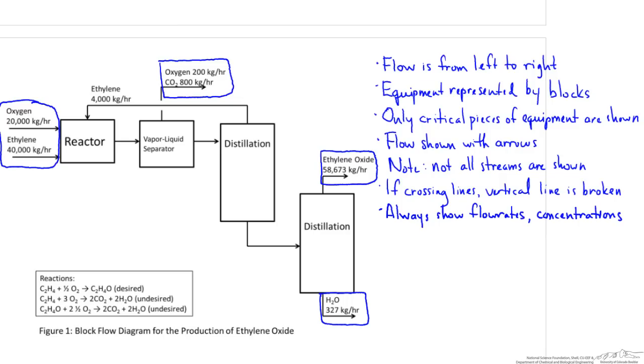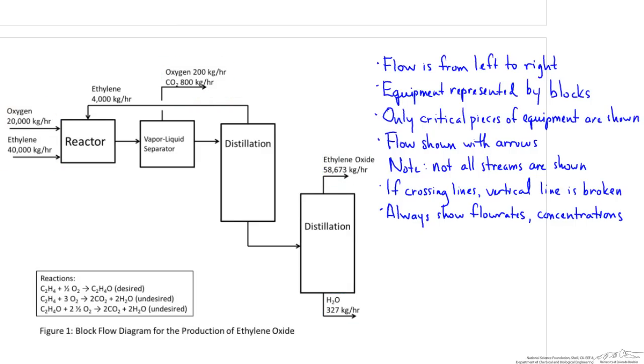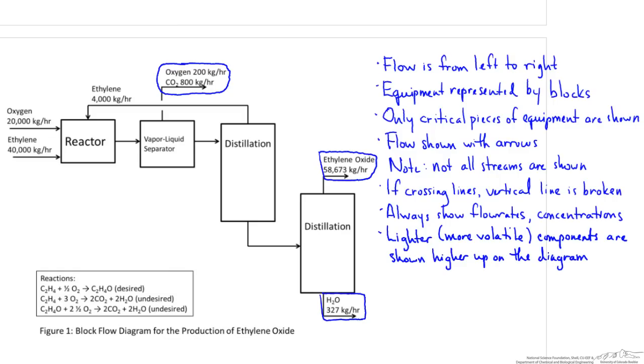Notice that light components like oxygen and carbon dioxide are shown coming out of the process higher up on the diagram than less volatile components such as ethylene oxide or water. This helps organize the diagram and also gives you a qualitative understanding of the relative volatilities of each stream. Notice that when I say lighter, I mean in terms of volatility, not molecular weight. For example, even though ethanol has a higher molecular weight than water, it should probably be shown higher up on a diagram since it's more volatile.